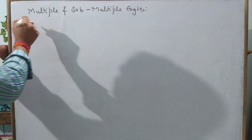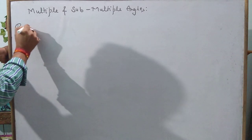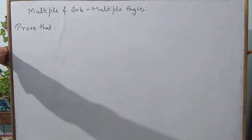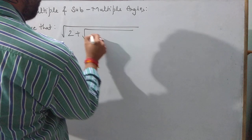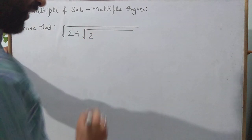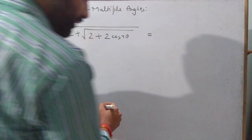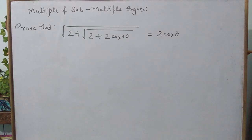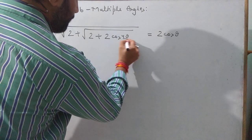On these formulas, today we are going to discuss some good questions. The question is: prove that √(2 + √(2 + 2cos4θ)) = 2cosθ. This is the problem we want to prove. In this case, notice the angle is 4θ.